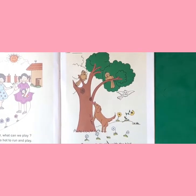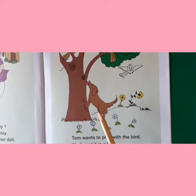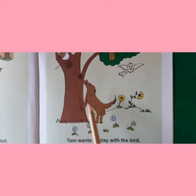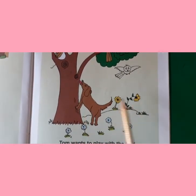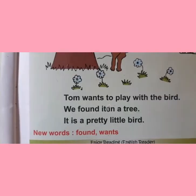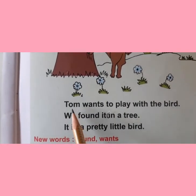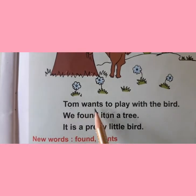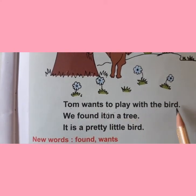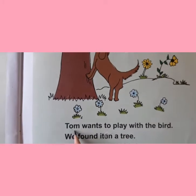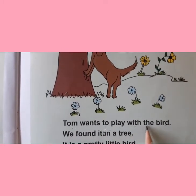And what else can you see? Yes, Tom. And where is Tom? Tom is under the tree. And colorful flowers are given here. Now let's read our sentences. Our first sentence is: Tom wants to play with the bird.